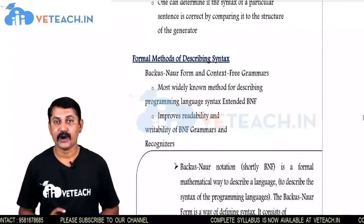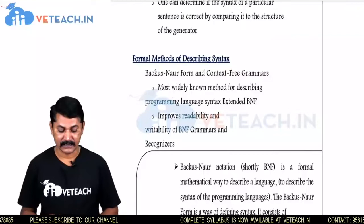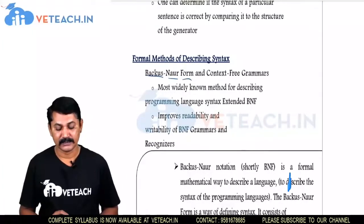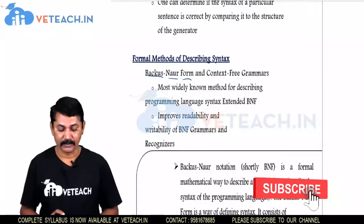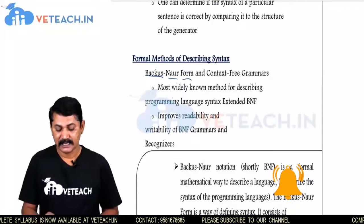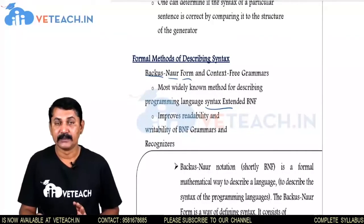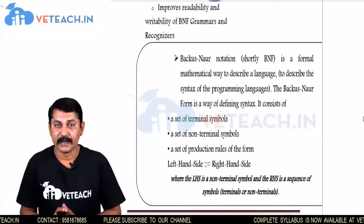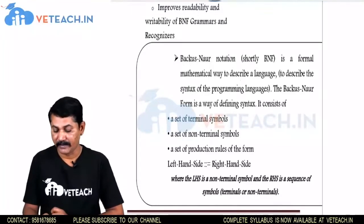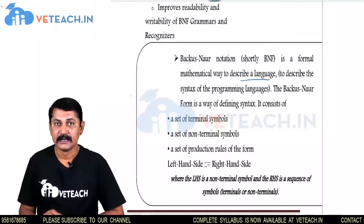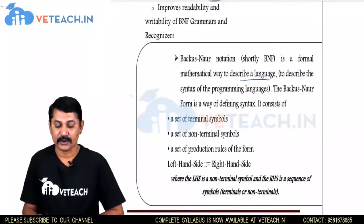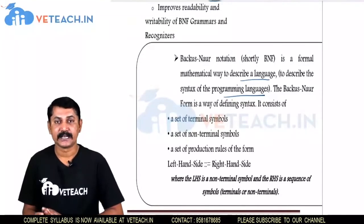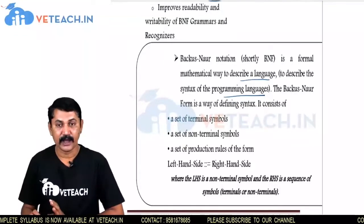Regarding formal methods of describing syntax: a method exists using a normal form called Backus-Naur Normal Form, which is a context-free grammar. It is the most widely known method for describing programming language syntax, also known as extended BNF. BNF is the formal mathematical way of describing a language. While designing a language, it defines a formal method to describe the syntax of programming languages and how programming languages support writing instructions.